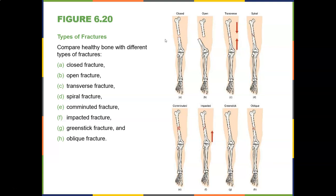Here are visual examples: closed fracture with intact skin; open fracture protruding skin; transverse fracture; spiral fracture; comminuted fracture with several pieces; impacted where fragments drive into each other; greenstick fractures common in children; and oblique fractures similar to spiral but without rotation. One patient sustained an oblique fracture while water skiing with osteoporosis.